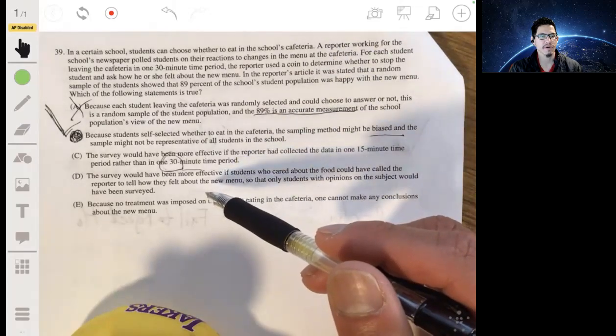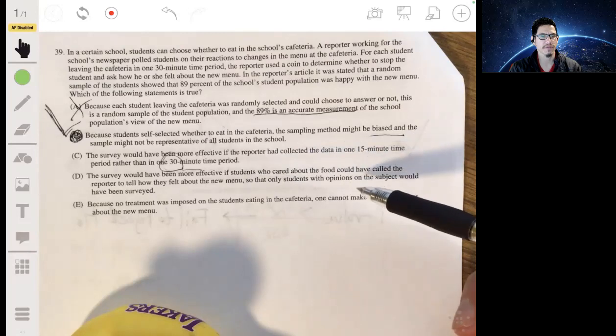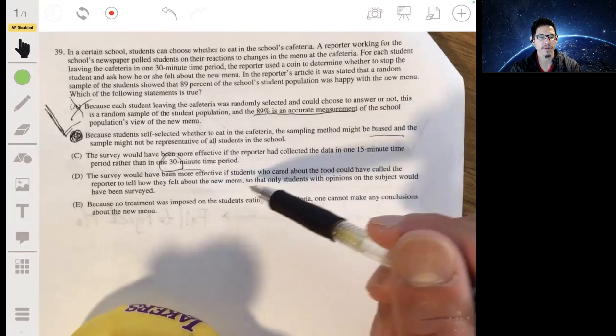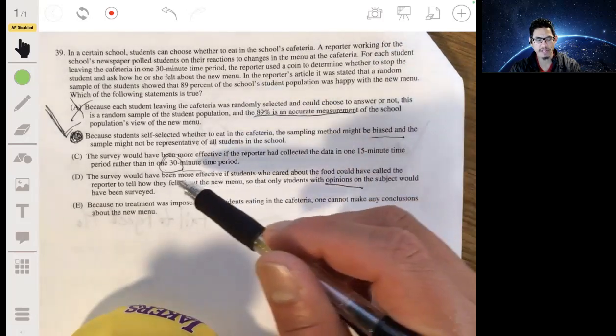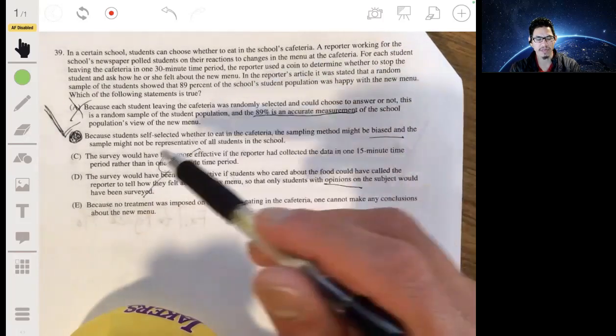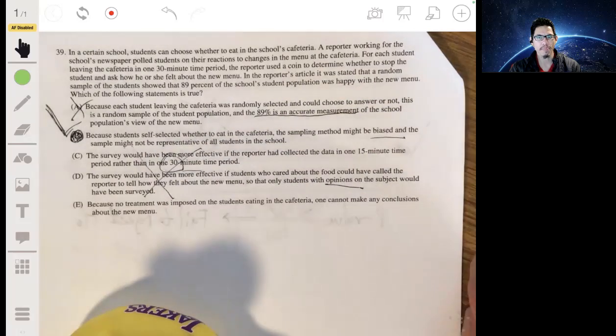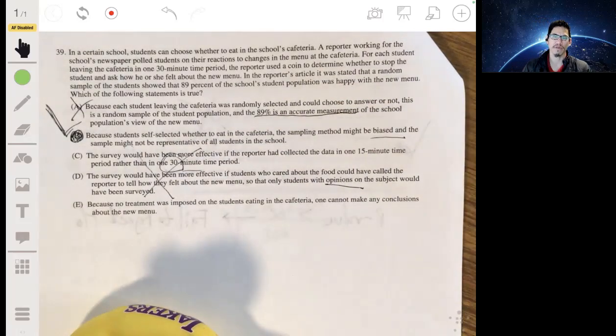D. The survey would have been more effective if students who cared about the food could have called the reporter to tell how they felt about the menu, so that only students with opinions on the subject would have been surveyed. That's what we don't want. Again, we want a general view of everybody, not just the people who care a lot.